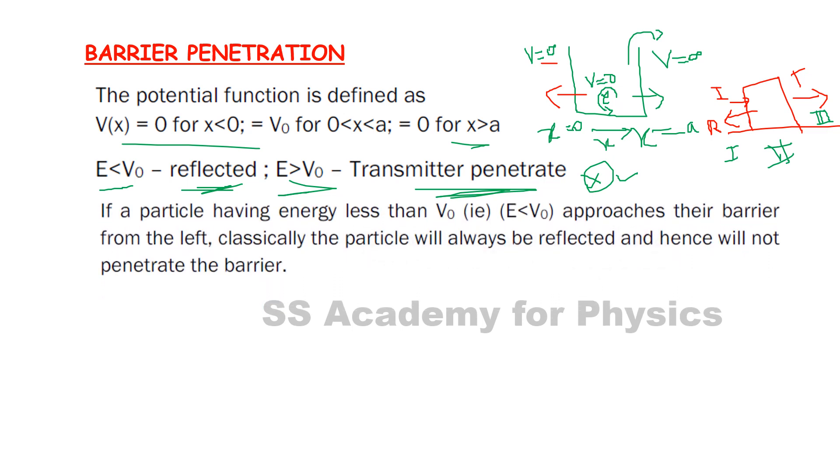If a particle has energy less than V₀ and approaches the barrier from the left, classically the particle will always be reflected and hence will not penetrate the barrier. If a particle is reflected, it will not penetrate to the other side.